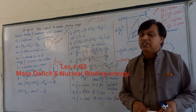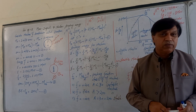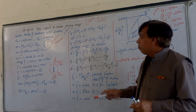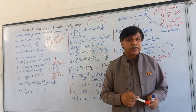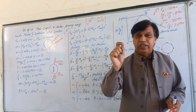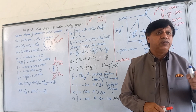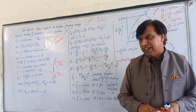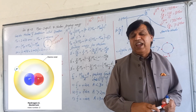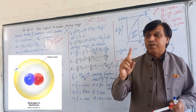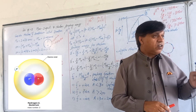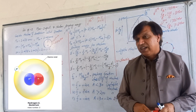We take the nucleus of deuterium, called the deuteron, having one proton and one neutron. The nucleus of deuterium is called the deuteron, the nucleus of protium is called the proton, while the nucleus of tritium is called the triton.